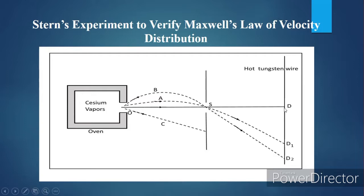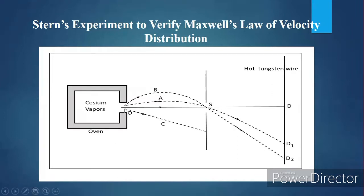It is observed that ionization current increases as you move the detector from D2, reaches a maximum at a certain point, and then decreases exponentially. At point D you have the highest velocity atoms. The slit arrangement ensures only atoms falling at the slit will reach the tungsten wire.